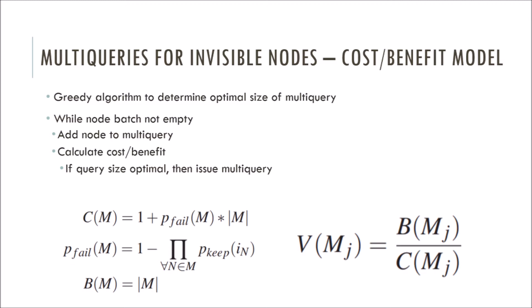If not, we loop back and continue to add another node and repeat the process. After we find the maximum V and issue the multi-query, we repeat the entire algorithm again for the rest of the nodes in the IQ. As a result, we create larger multi-queries for nodes with the high probability of staying invisible and smaller multi-queries for nodes which are likely to turn visible.